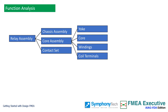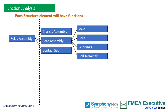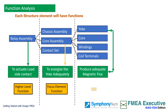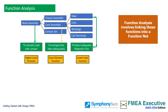The next step in FMEA is to assign functions to each structure. Functions are assigned to each level of structure — product, sub-assemblies and components. Each has a function to perform. Reminding you of the definition, functions describe what useful work each structure should be doing.